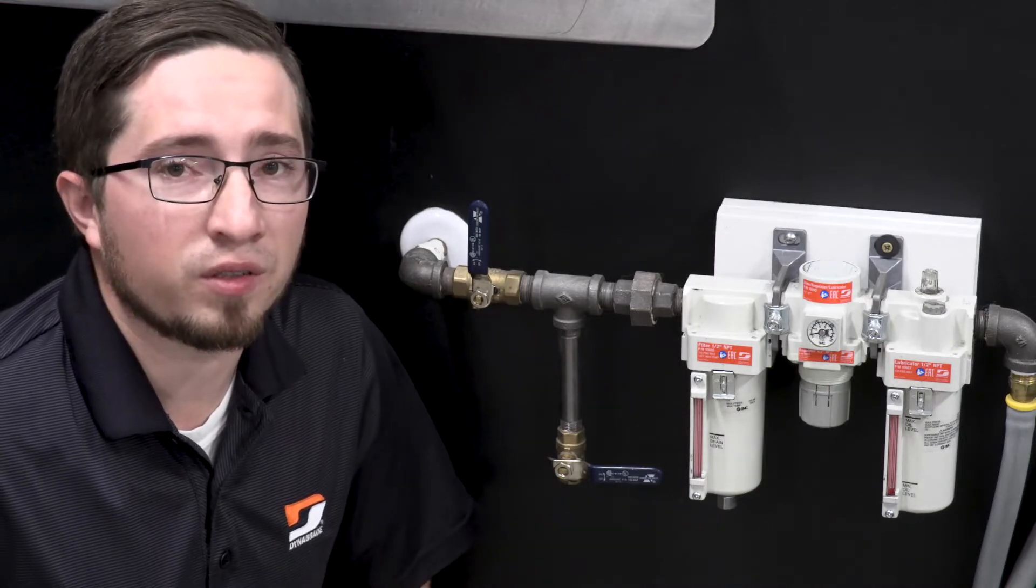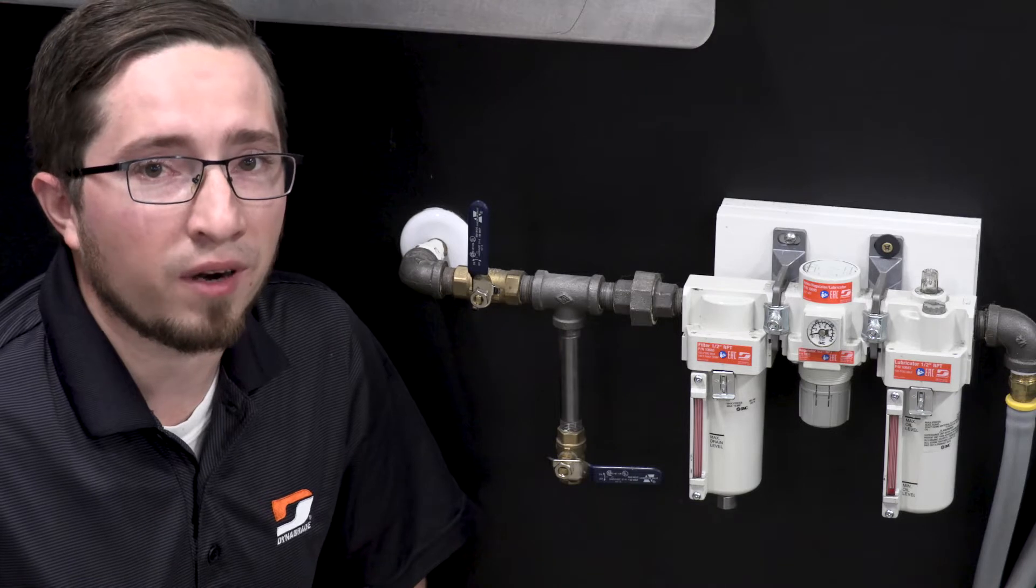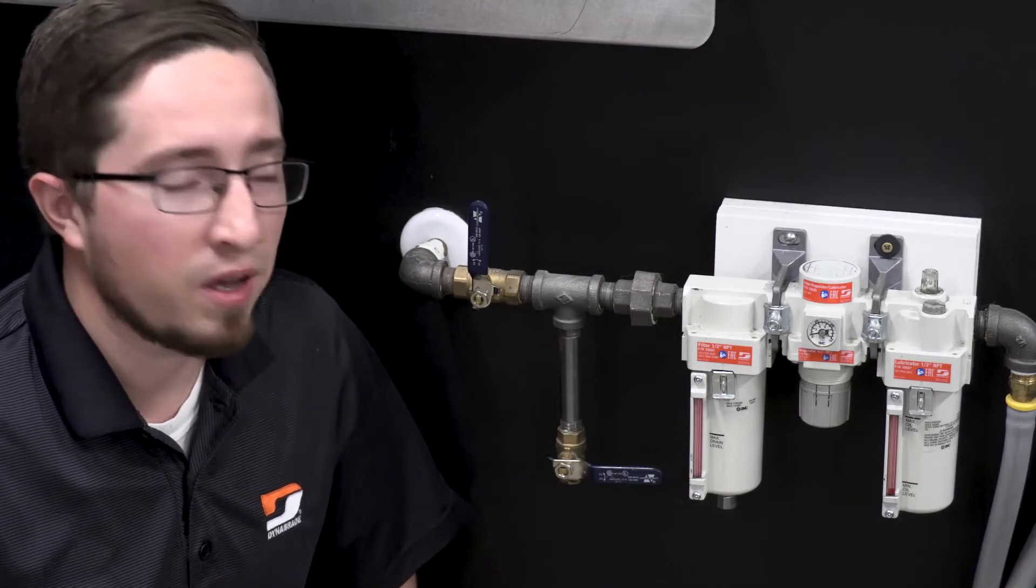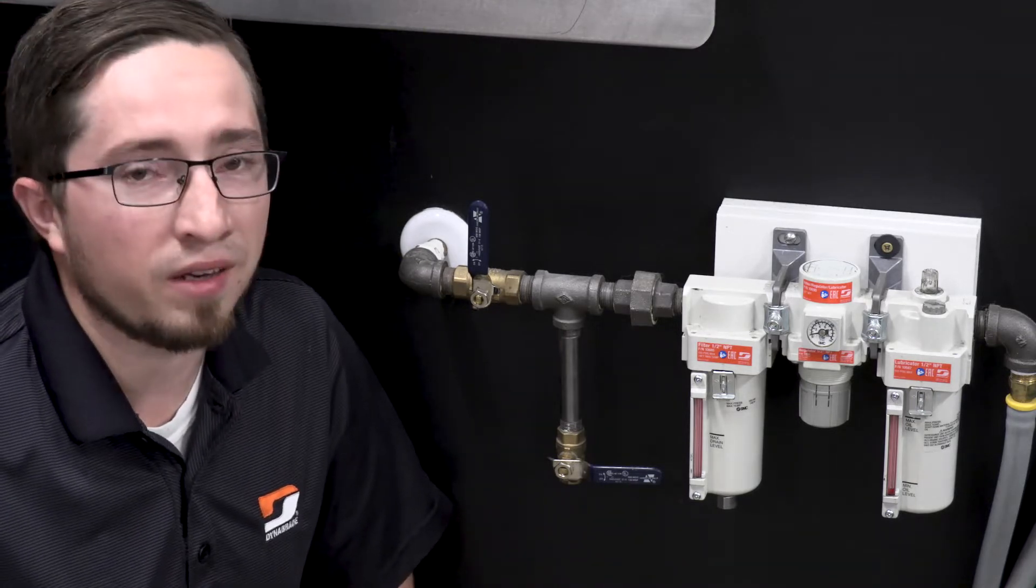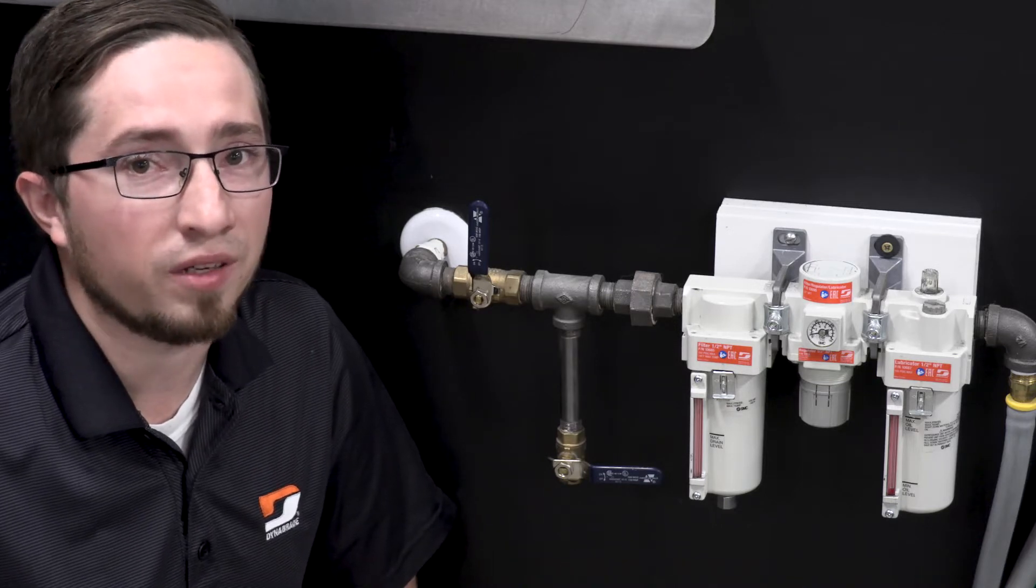Shown here is our DynaBraid filter regulator lubricator, also known as an FRL, DynaBraid part number 10690. In this video we're going to show you how to maintain your FRL to ensure that you have clean air and lubrication always supplied to your tool.